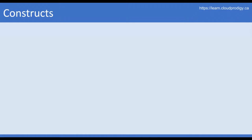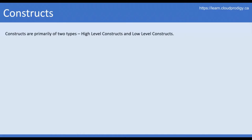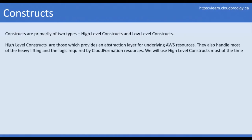Since constructs are the backbone of any CDK application, let's try to understand what a construct is. Constructs are primarily of two types: high-level constructs and low-level constructs. High-level constructs provide an abstraction layer for underlying AWS resources, meaning there is a construct defined for AWS services, and we use those constructs to provision resources. They also handle most of the heavy lifting and logic required by CloudFormation resources.